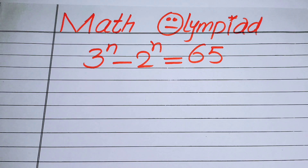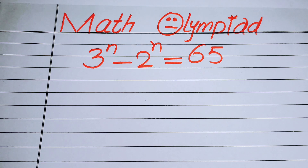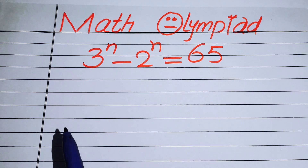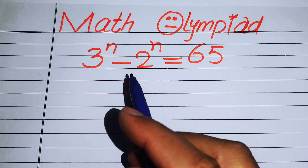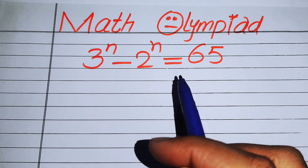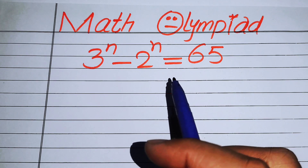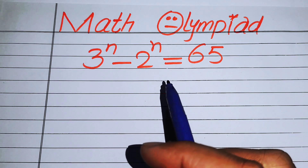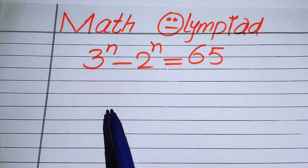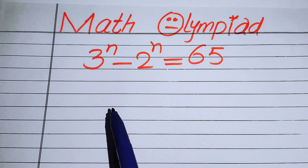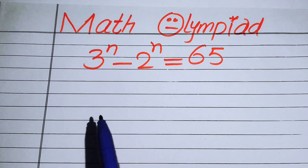Hello everyone, welcome back to the Map of Mathematics. In this video we are going to solve this nice algebra problem: 3 to the power of n minus 2 to the power of n equals 65, and we will solve this problem for the values of n.